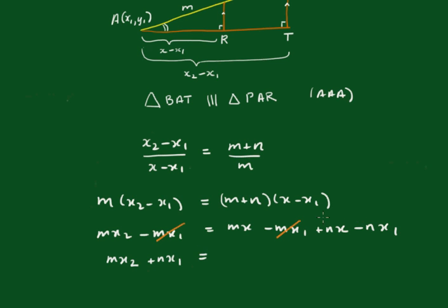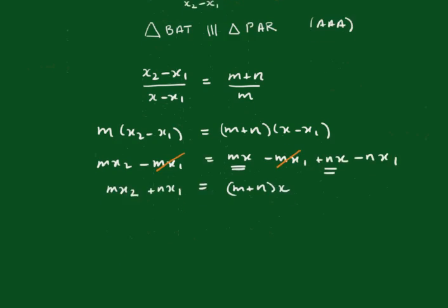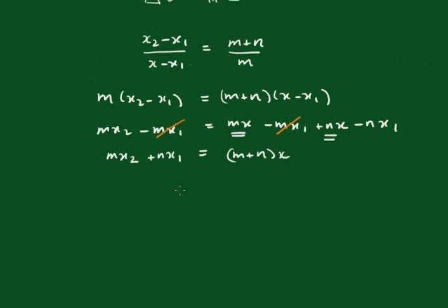Take that one across. And now you'll see here, we have a common factor of x. So that's (m + n) outside of x. And then dividing through by (m + n), we simply get x = (mx2 + nx1)/(m + n).